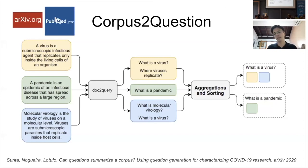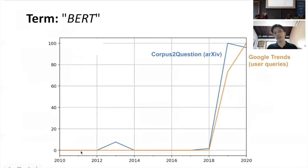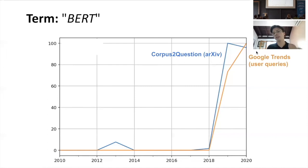These extracted terms are attached to the original documents which contain publication dates. With that information we can trace charts like this one — the x-axis is the year of publication and the y-axis is the normalized currency of a particular term. If we look for the term 'BERT' using our method — called corpus-to-question — extracting terms from arXiv, we see that around 2018 BERT starts to grow and by 2019 reaches a high level, matching the Google Trends curves.